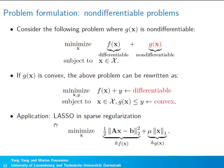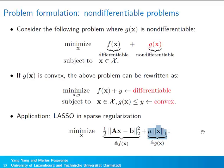As an important application, the LASSO problem in sparse signal processing may be familiar to many. Here x is the signal we want to recover, and we minimize a quadratic loss function. Using prior knowledge that x is sparse, we add an L1 norm regularization term to push the solution toward sparsity.